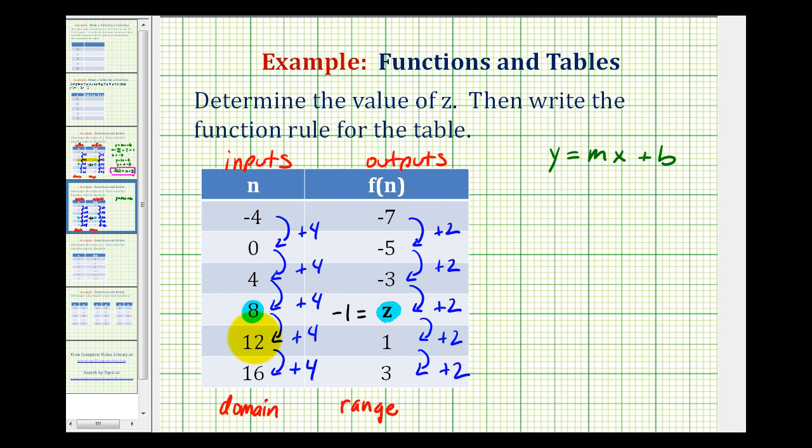So we're going to treat this first column or the inputs as x values and we'll treat the outputs or f of n as y values. And in slope-intercept form, remember that m is the slope or the ratio of the change of y to the change of x and b is the y-intercept. Now, looking at our table, notice the change of y is positive two when the change of x is positive four. So our slope would be one-half.